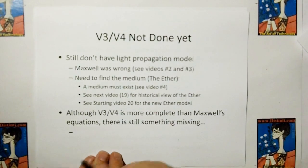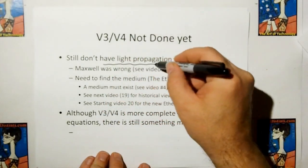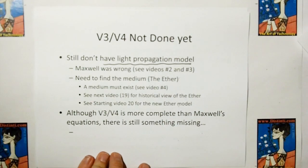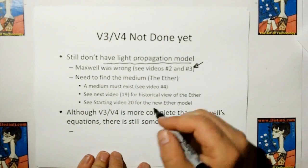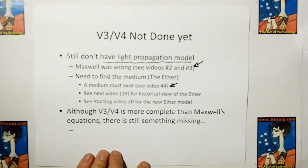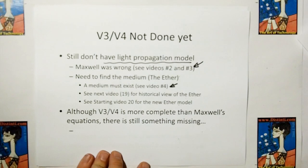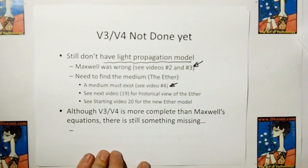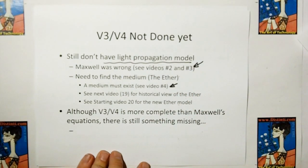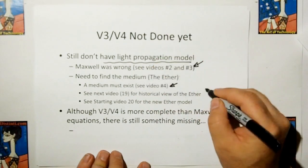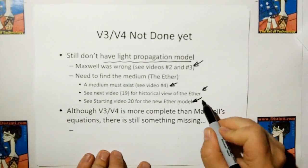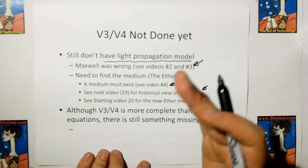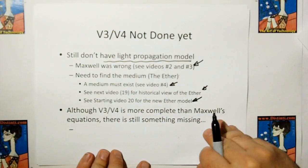But we're still not done. We showed, we still do not have a light propagation model at this time. I showed you that Maxwell was completely wrong in videos 2 and 3. And in video number 4 we theorize that a medium must exist, it has to exist. And so we have to continue on and find a newer model of the ether that satisfies all of the criticisms that the old ether had. We're going to look at the old ether in video 19. And we're going to begin the derivation of the new ether model in video number 20, 21, and 22.